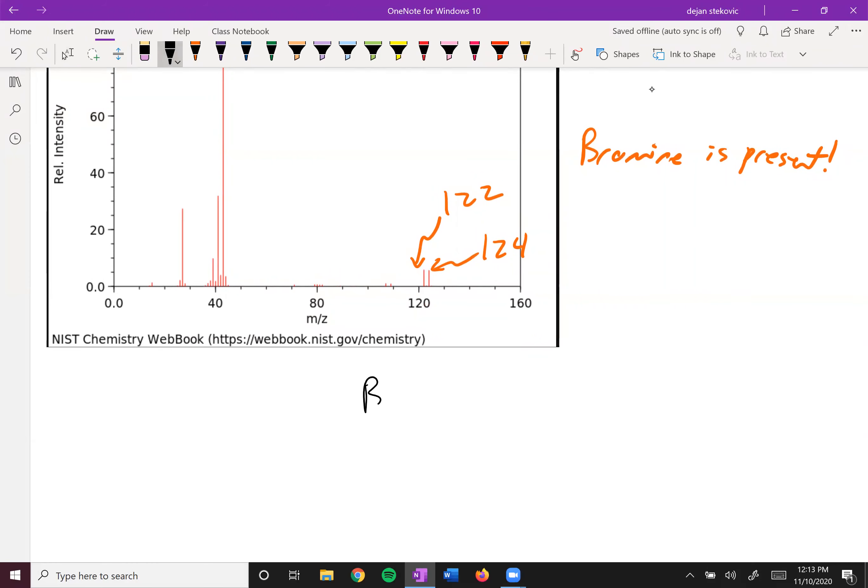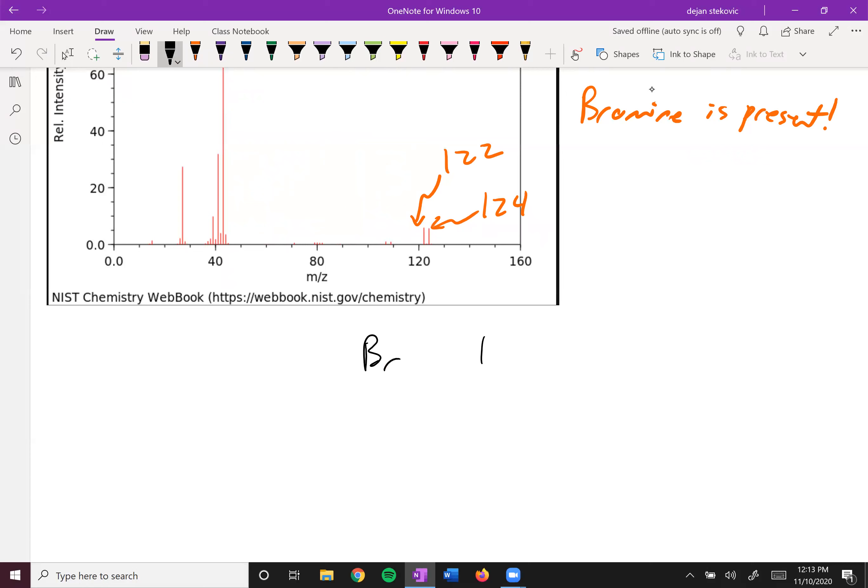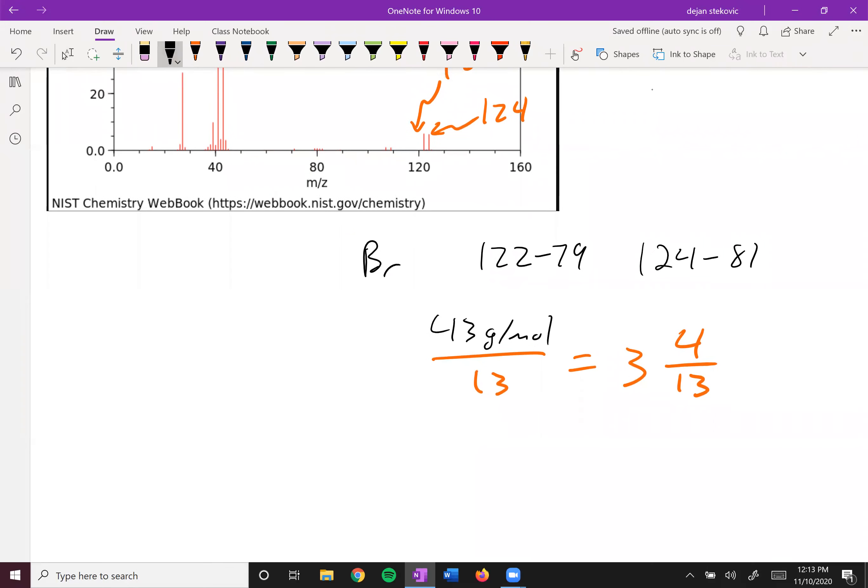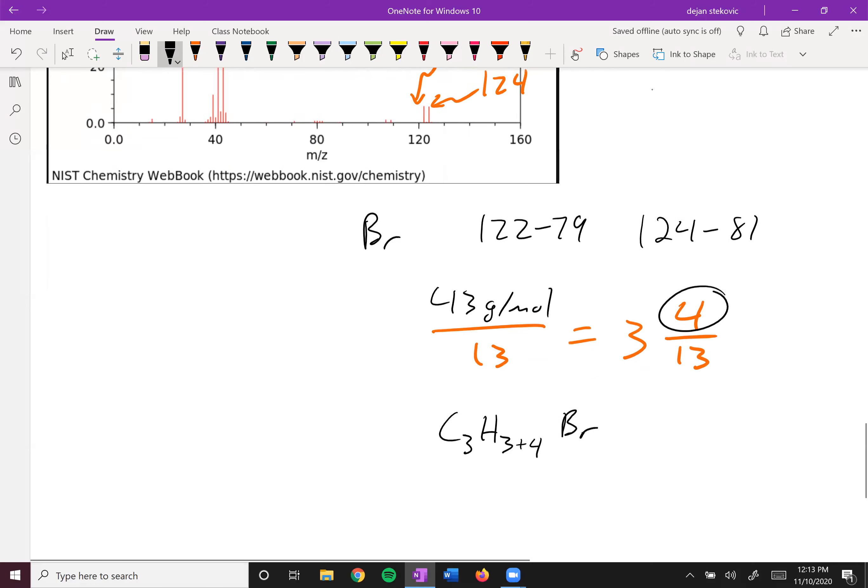And so we want to see what else is there. Bromine is in our molecular formula. And so we could take the 122, subtract out a bromine. In this case, it'd be a 79 or the 124, subtract out a bromine. In this case, it'd be 81. Either way, you get 43 grams per mole. We use our rule of 13, divide this number by 13. And what you get is three with a remainder of four. And so that tells us that we have three CHs. So we have C3H3. The remainder of four tells us that we could have four extra hydrogens. And then we also have a bromine.